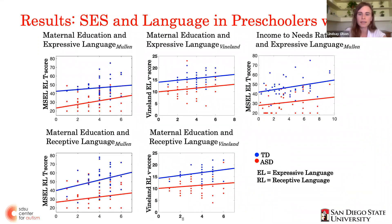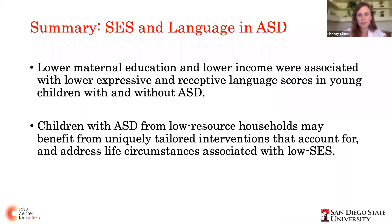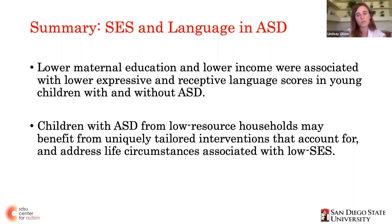We found that SES variables were positively associated with language skills in preschool children with autism, even when controlling for the effect of autism diagnosis on language skills. These results highlight the importance of examining patterns of language development in children with ASD from low-resource communities, as these children may benefit from uniquely tailored interventions that account for but also address life circumstances associated with low SES. Overall, our results also highlight the need to consider SES variables when conducting ASD research, as they are often overlooked or underreported.